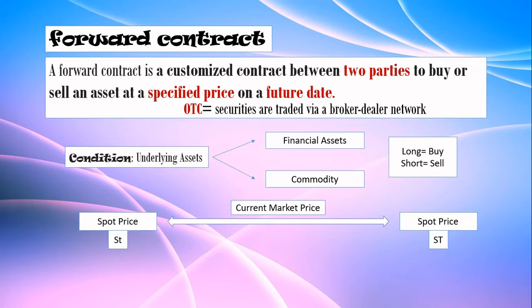So s_t is the current market price at the time you make the deal. For example, if you're making a deal for three months, after those three months there must also be a spot price — that is called the future spot price, denoted as S_T. You lock in the deal today using the current spot price, and at the end of the contract period you will have the future spot price S_T. That is the key difference between s_t and S_T.